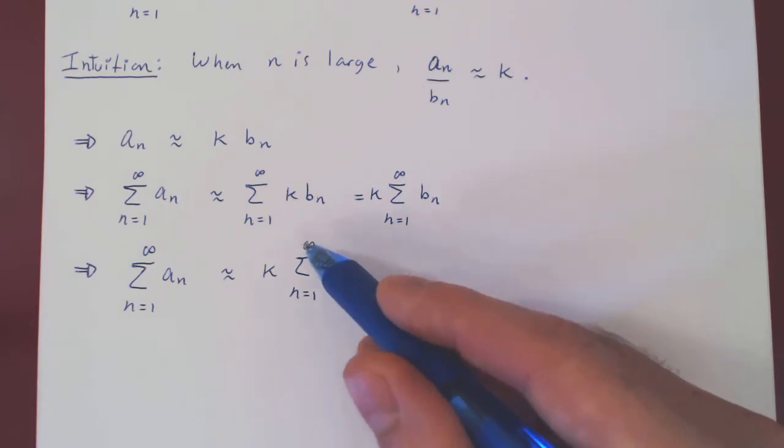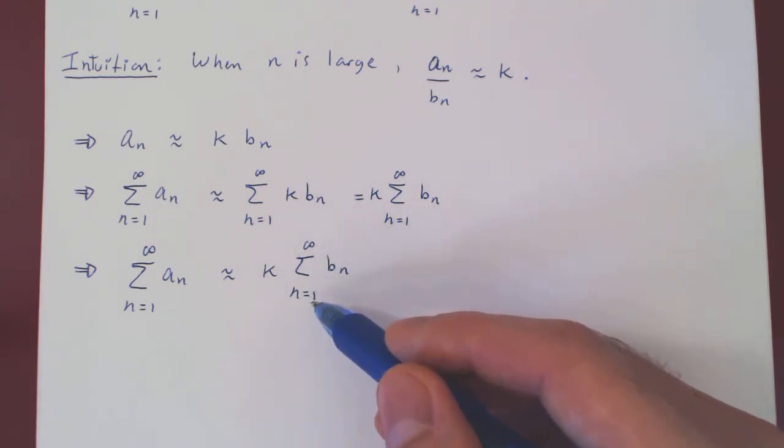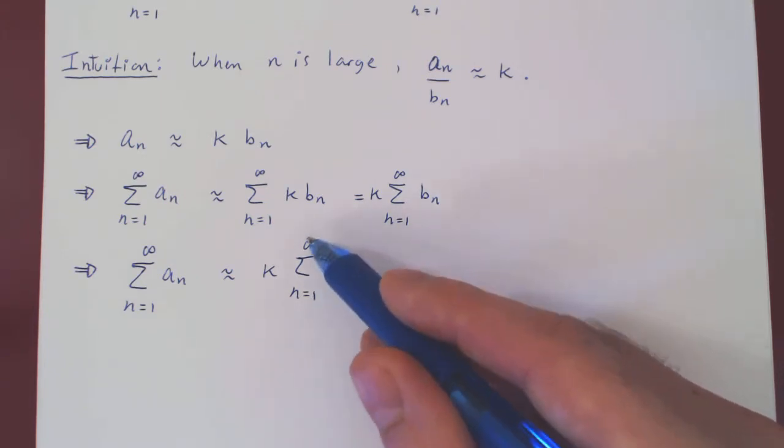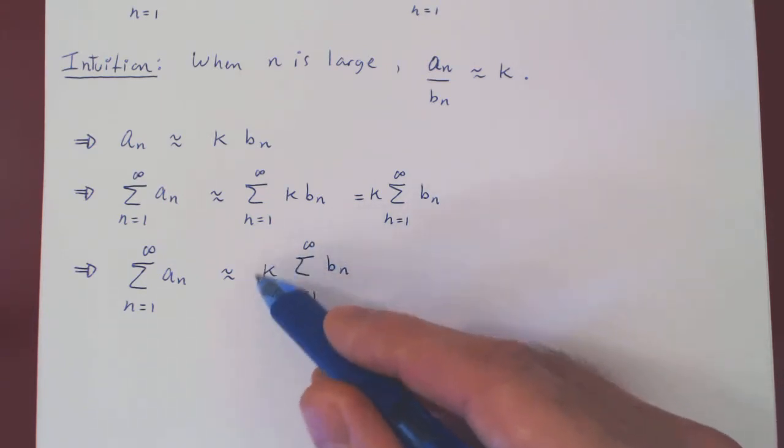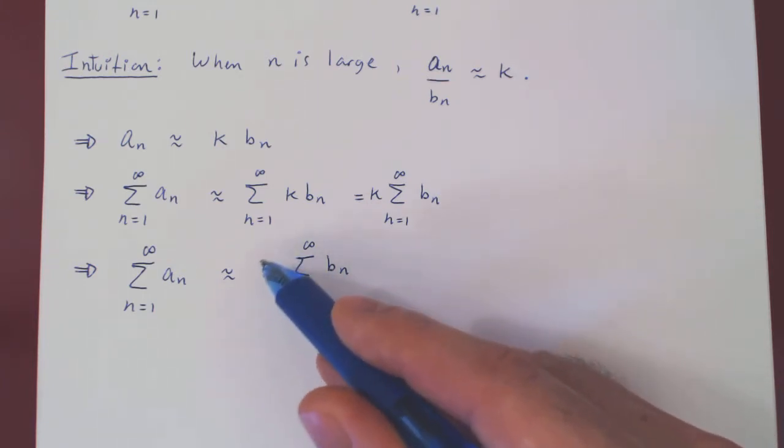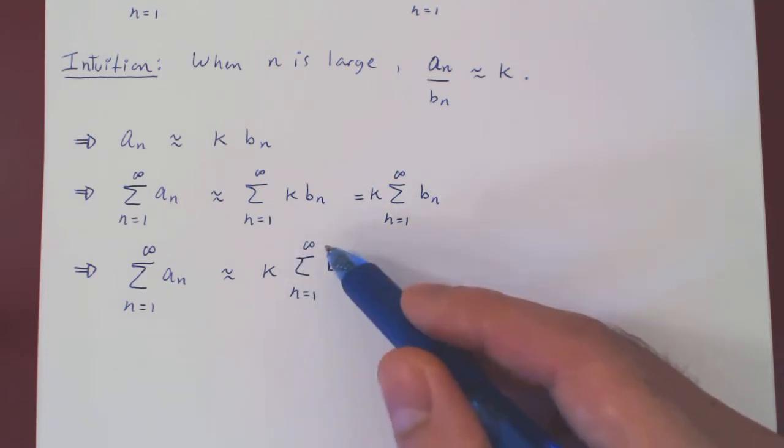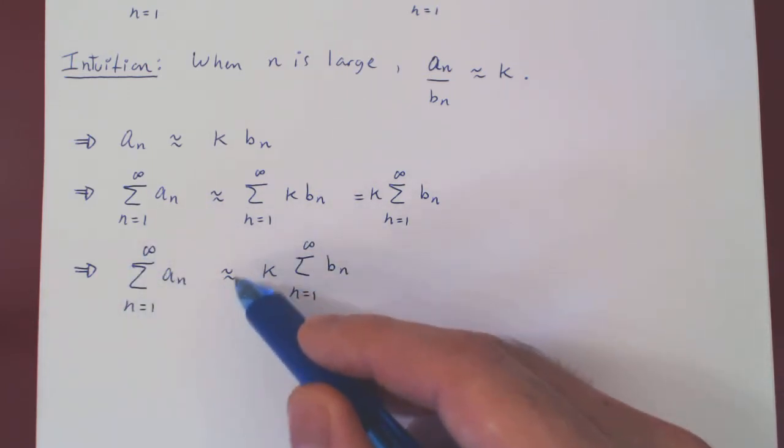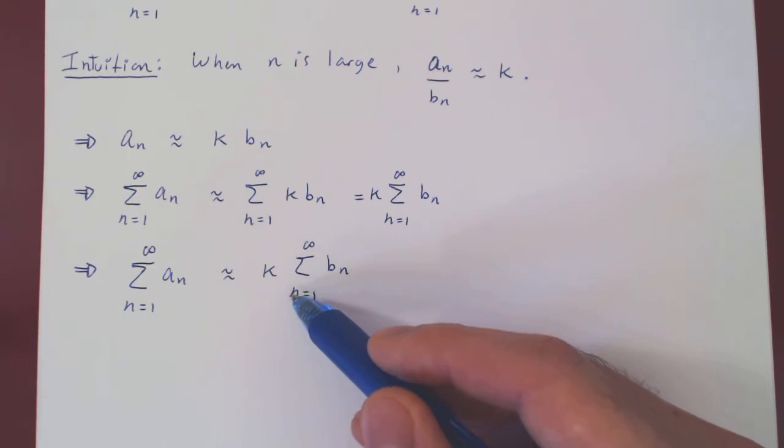But, in the other case, what if the series of bn diverges? Well, it has to be infinite. But if this is infinity, a positive multiple of infinity, as k is assumed to be a positive real number, a positive multiple of infinity is infinity. So the series of an is roughly infinite, so it's infinite.